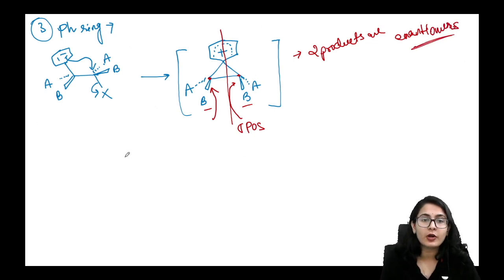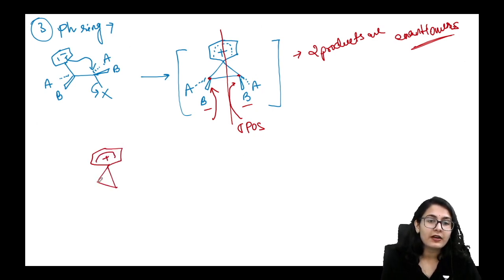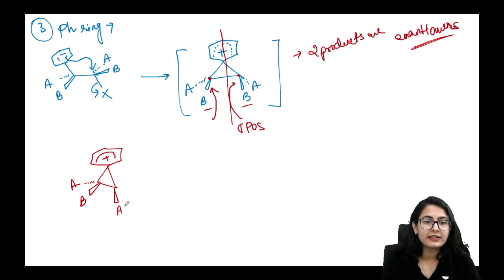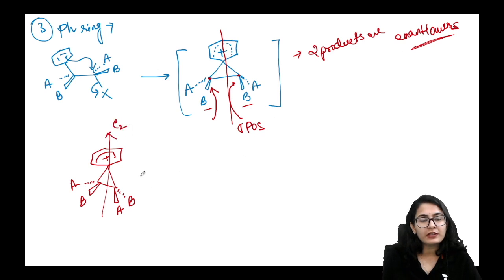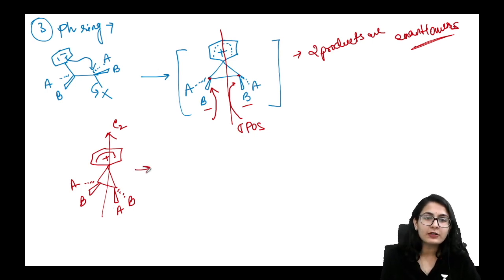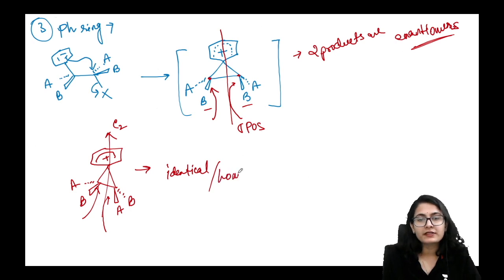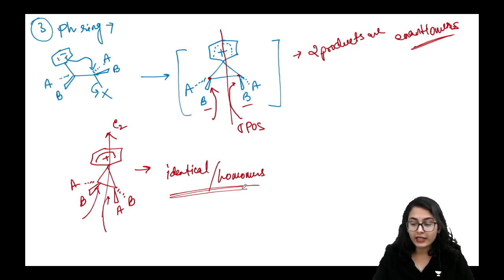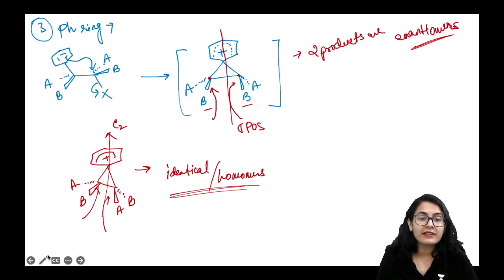When the phenonium ion intermediate has a C₂ axis of symmetry — as in a differently substituted molecule — rotating the molecule shows the two ring-opening possibilities give identical molecules, that is, homomers. This distinction between enantiomers and homomers from phenonium ion intermediates is very frequently asked in examinations.